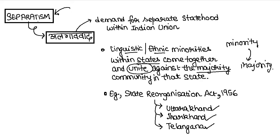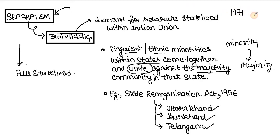There have been many demands including the creation of Bodoland for Bodo speakers in Assam, Gorkhaland for ethnic Gorkha (Nepali) people in West Bengal, and Bundelkhand state covering parts of Madhya Pradesh and Uttar Pradesh. There is also a demand for full statehood — for example, New Delhi. Most of these demands have been accepted. In 1971, Himachal Pradesh got full statehood. Thereafter, Manipur, Tripura, Mizoram, Arunachal Pradesh, and Sikkim also got full statehood.